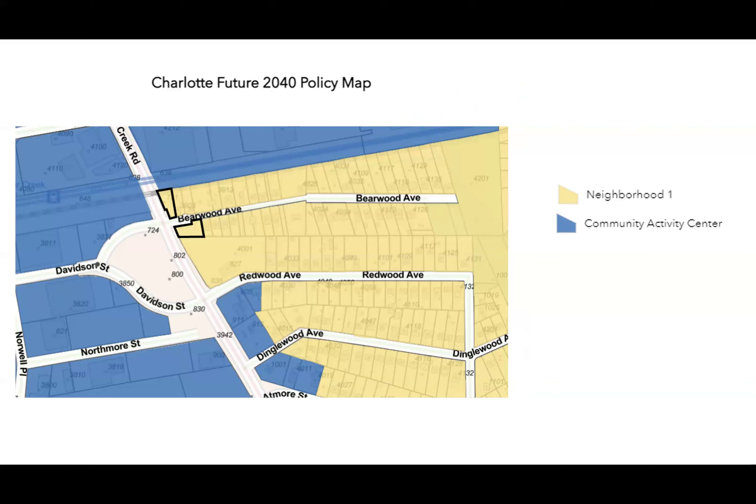Here's the Charlotte Future 2040 Policy Map, identifying the site and all surrounding neighborhood as Neighborhood 1. So this is what's known as a consistent rezoning petition. The remaining area, although under TOD zoning, is identified as a community activity center. Neighborhood 1 is meant for residential dwellings and ancillary neighborhood services such as schools, community centers, and places of worship. The reasoning behind this rezoning petition is to align with the existing neighborhood character and neighborhood place type.